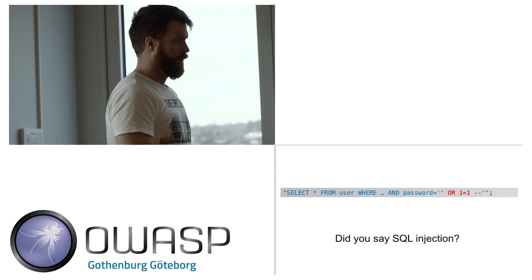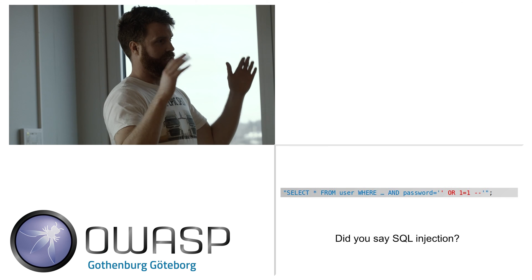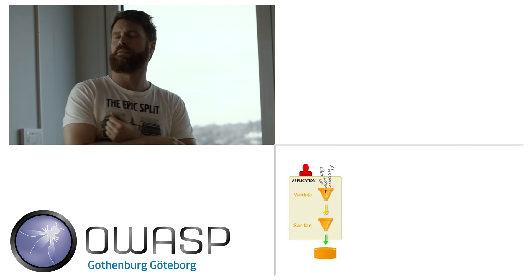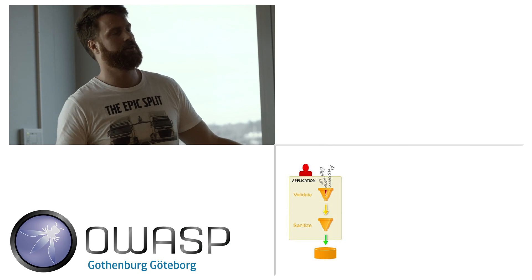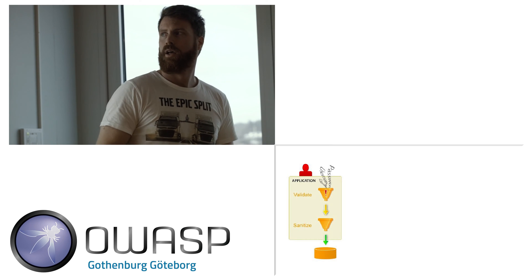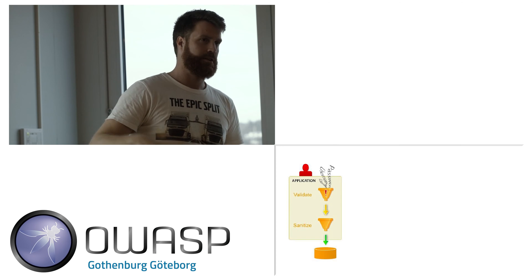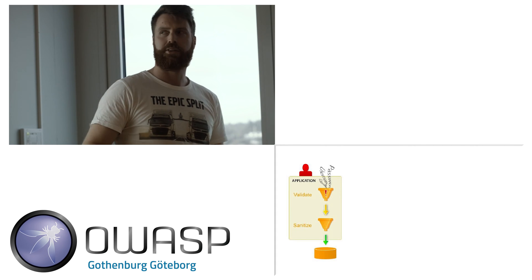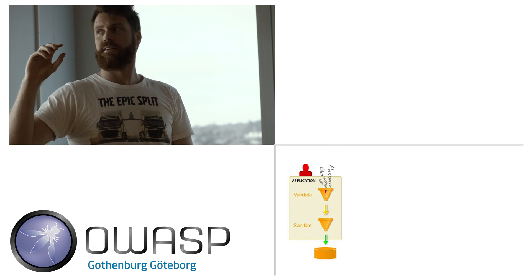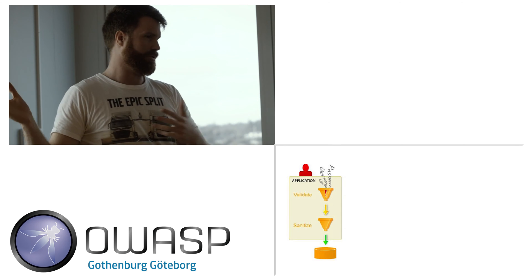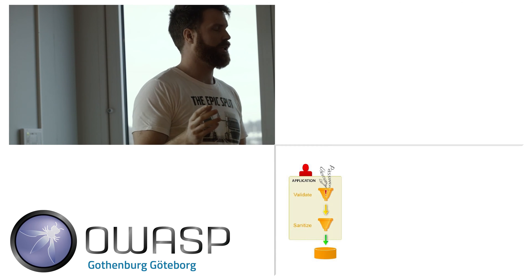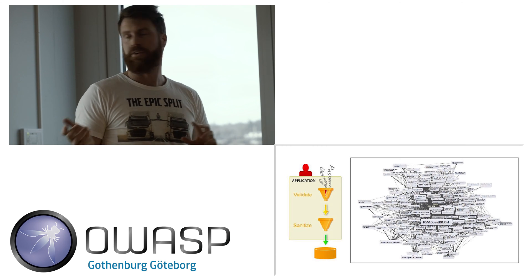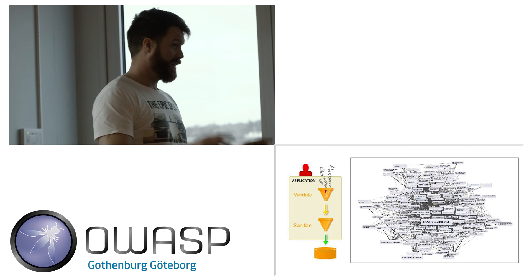OWASP Top 10 is a list of dangerous stuff that could happen to your computer programs. You have your application, you get stuff from outside — internet, whatever — and what you should do is validate and sanitize it before it goes into the database or before you output it again. If your codebase is 100 lines of code, it's pretty easy to find all of this. But when your codebase is much larger, you have a much harder problem — and this is where tools can help you.